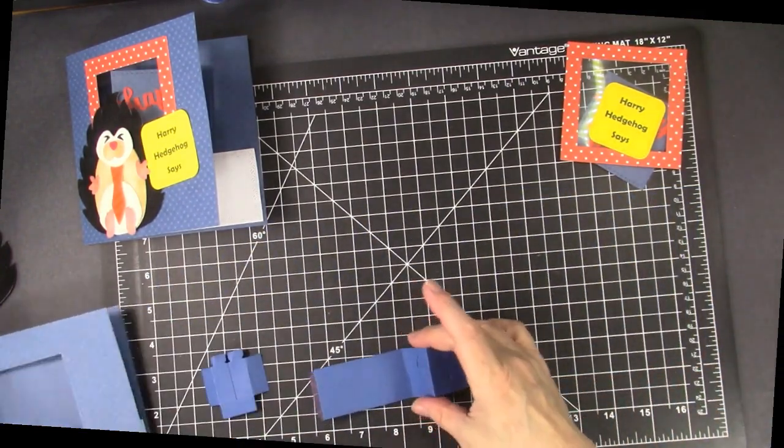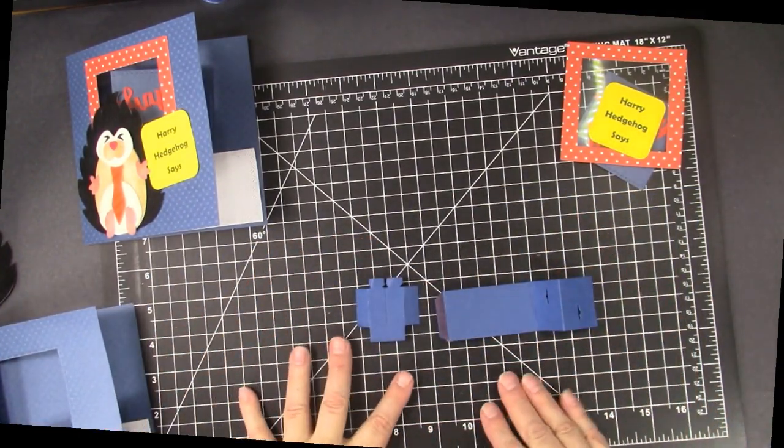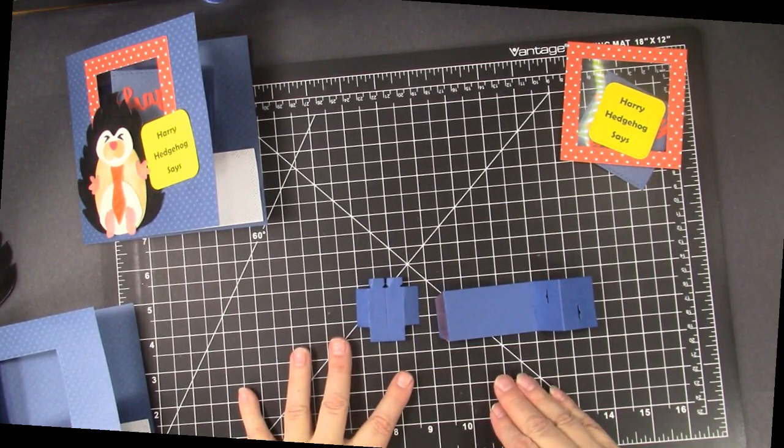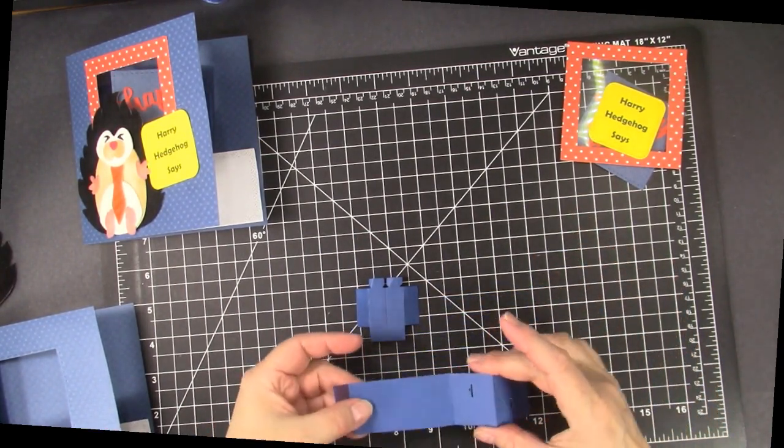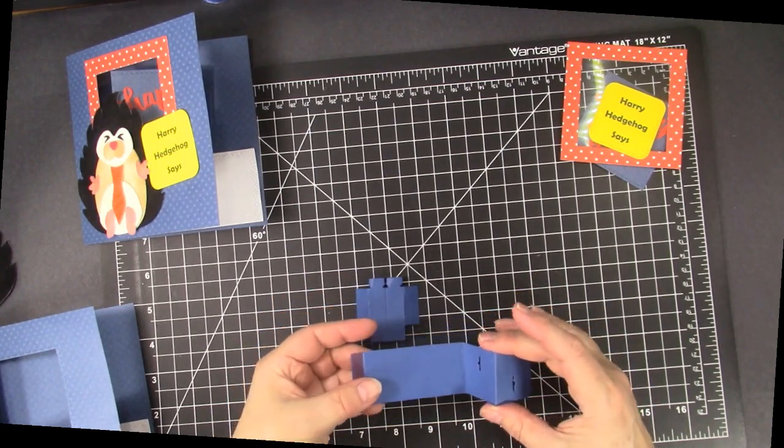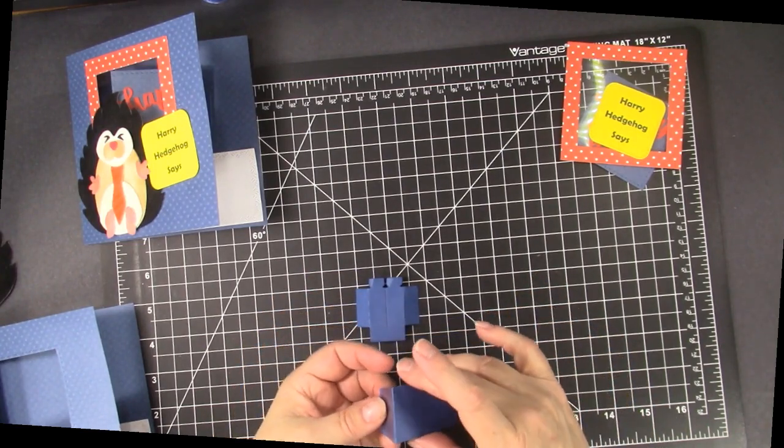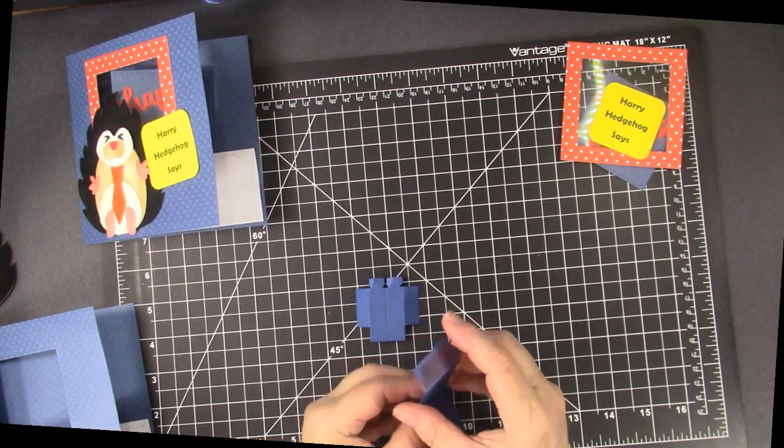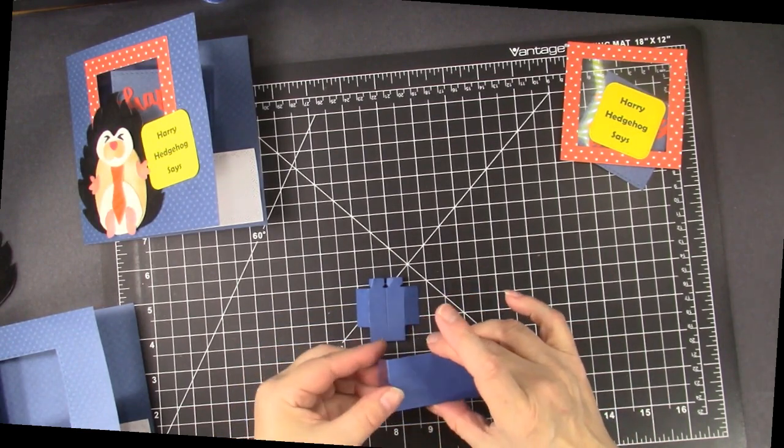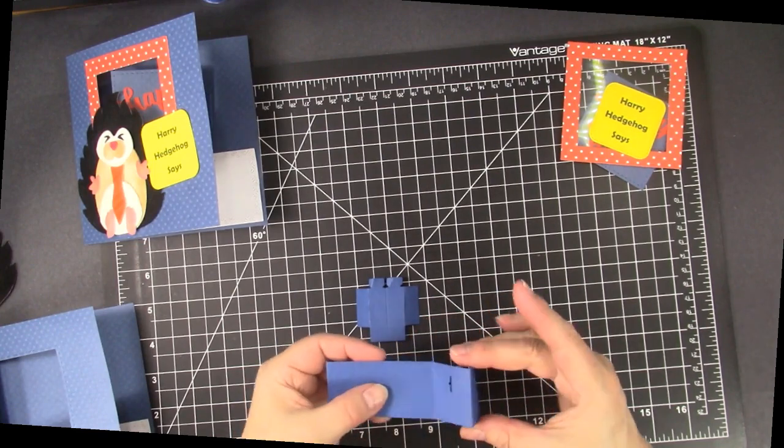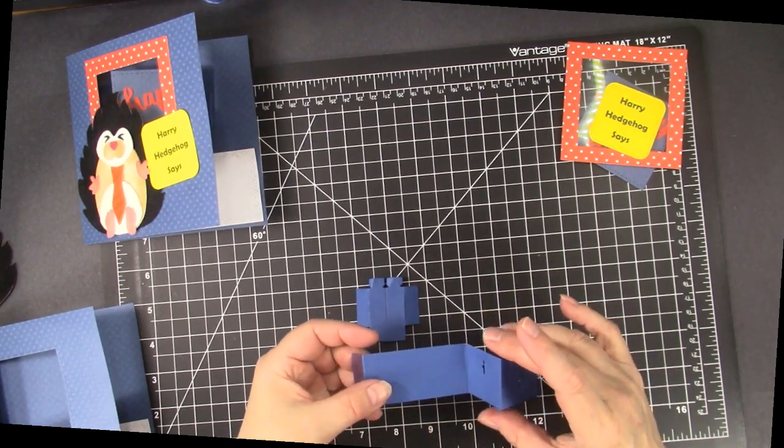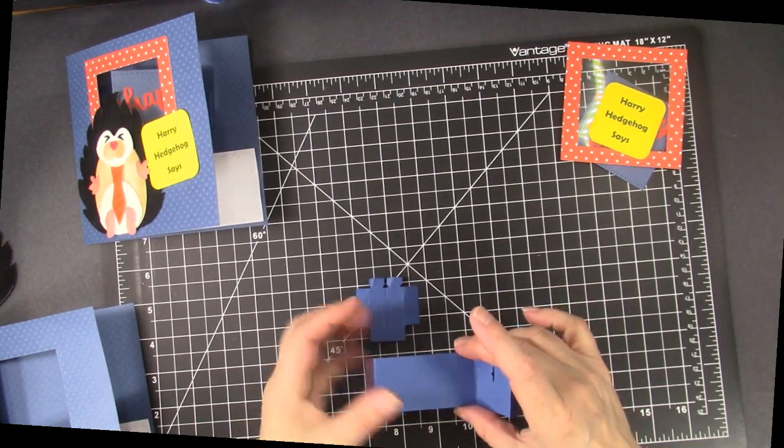So this is the two apparatus pieces that are in the die set. And when you die cut this piece here, you're going to fold it from a mountain fold, a valley fold, and a mountain fold. So there's three lines there and you do mountain, valley, mountain.